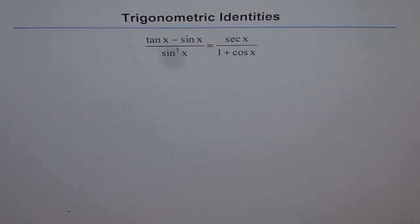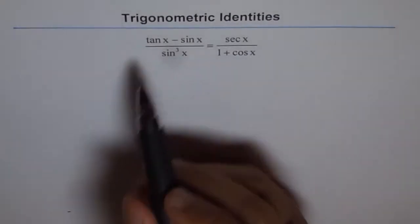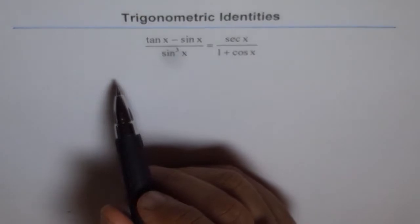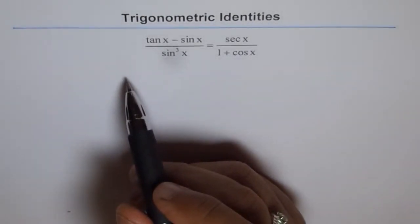The trigonometric identity to prove is: tan x minus sin x divided by sin cube x equals secant x divided by 1 plus cos x. Let's start with the left side and write tan as sin over cos, then simplify and see what we get.